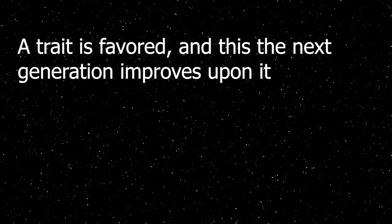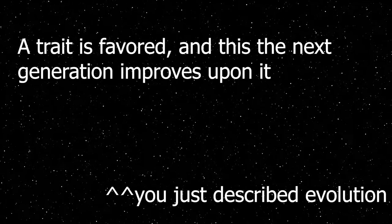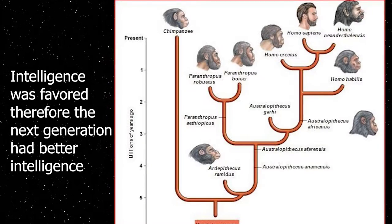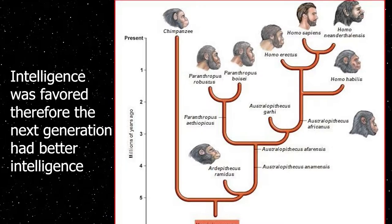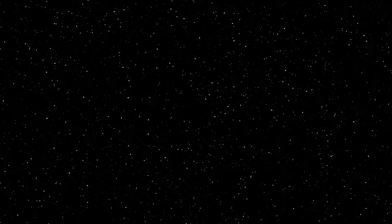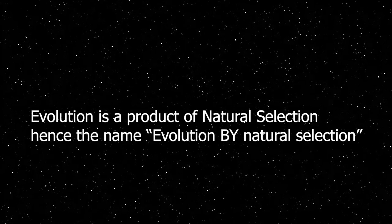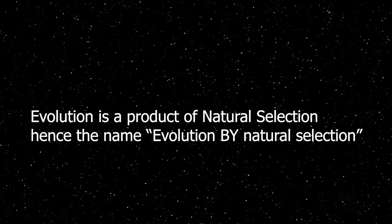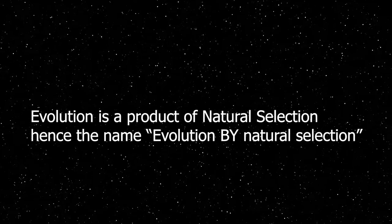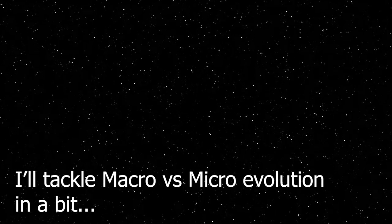I have heard that there are creationists who do see natural selection as a real occurrence, wherein a characteristic is favored and thus the species will improve on it in the next generation. For example, for our ancestors, intelligence was favored by natural selection, and thus we are more intelligent than our ancestors. But you just described evolution. Evolution is the product of natural selection — when a trait is favored, evolution takes place. This is why you and I don't have wings or X-Men mutations. Evolution, no matter how beneficial or detrimental, no matter how big or small the change, is still evolution.